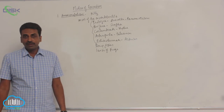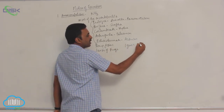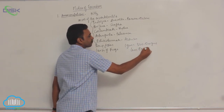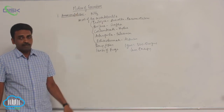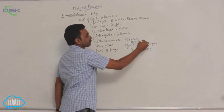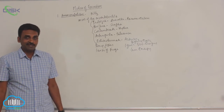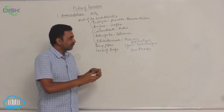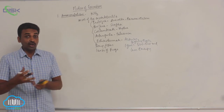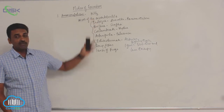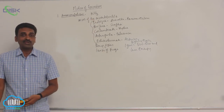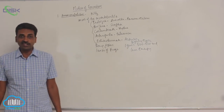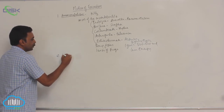To excrete one gram of ammonia, 300 to 500 grams (ml) of water is required — a lot of water, though very little energy is needed. Because ammonia is highly toxic, it must be pushed out quickly. The animal requires up to half a litre of water per gram of ammonia. However, most of these invertebrates and bony fishes already live in water, so they can afford to lose water and spend less energy in the process. This brings us to ureotelic animals.